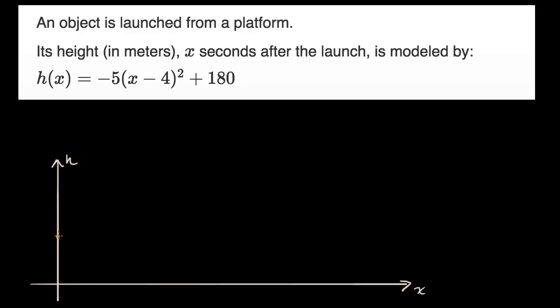At time x equals zero, we're already gonna have some height because we're on some platform, and then we're going to launch this projectile. And it's gonna go in the shape of a parabola, and it's gonna be a downward-opening parabola. I didn't draw it exactly perfectly, but you get, hopefully, the point.